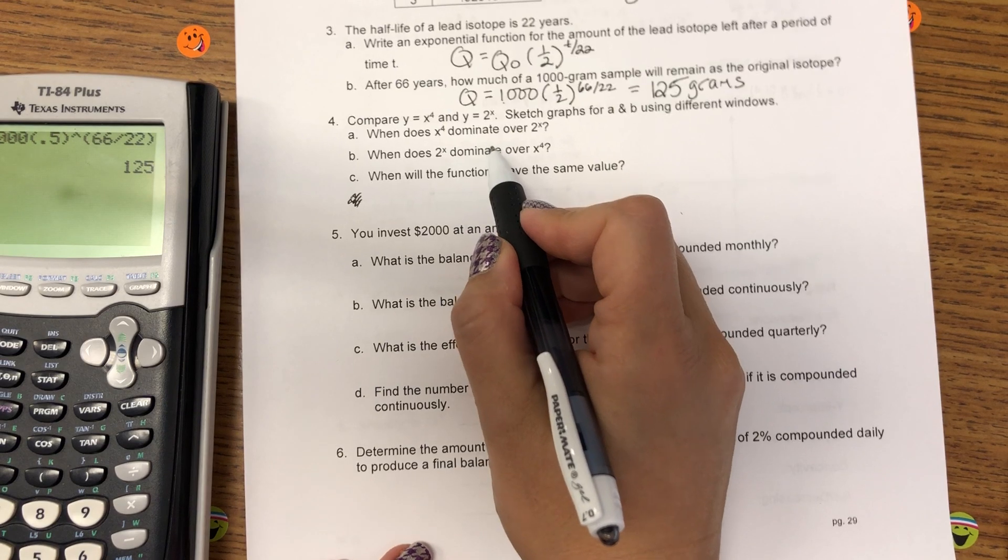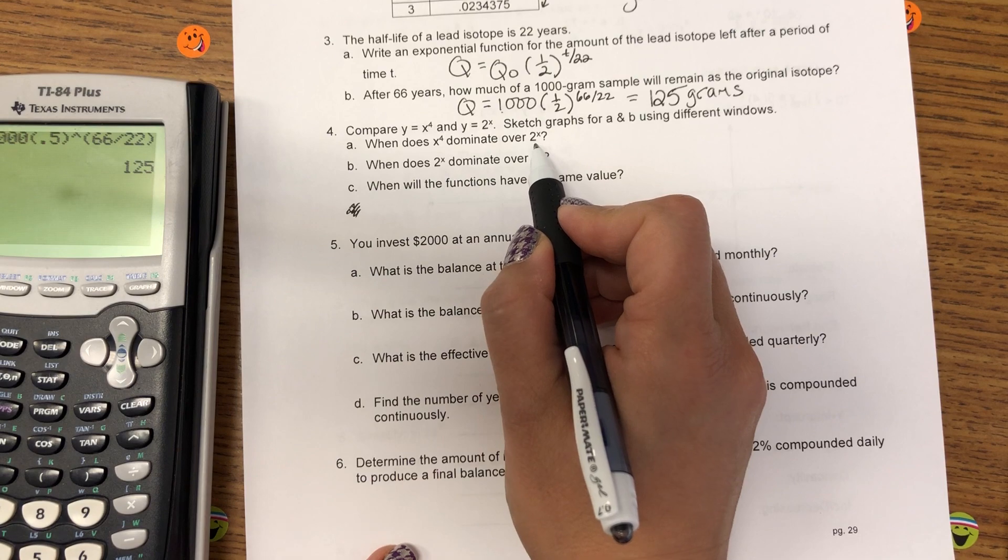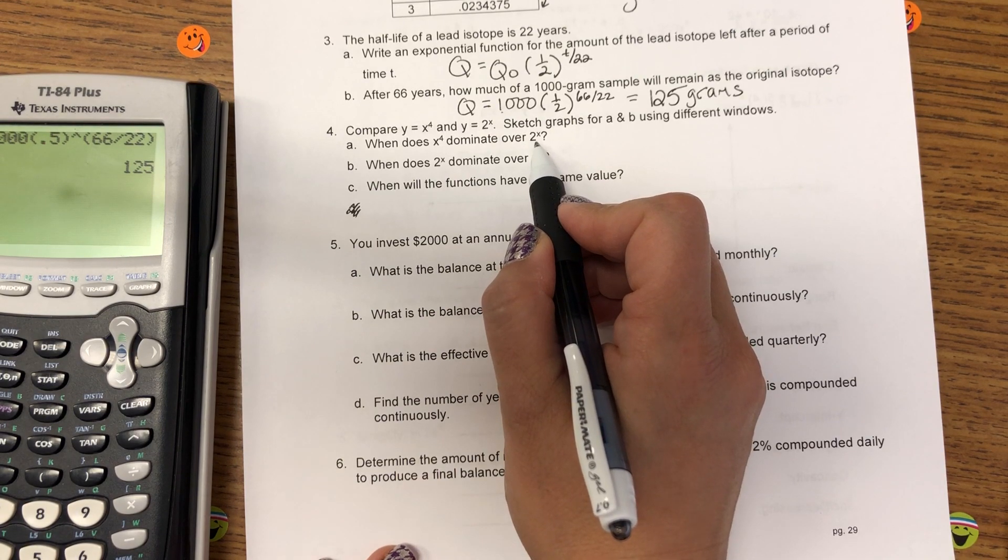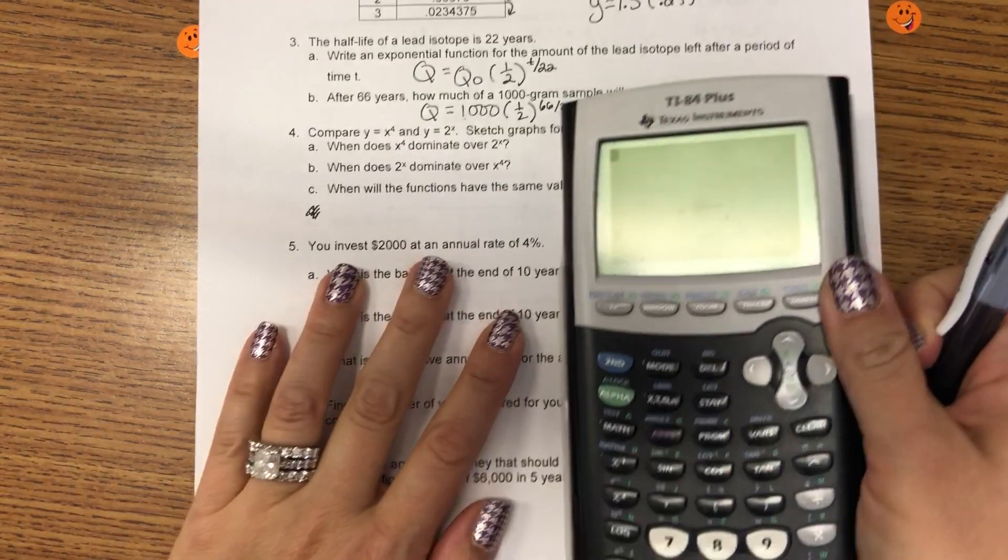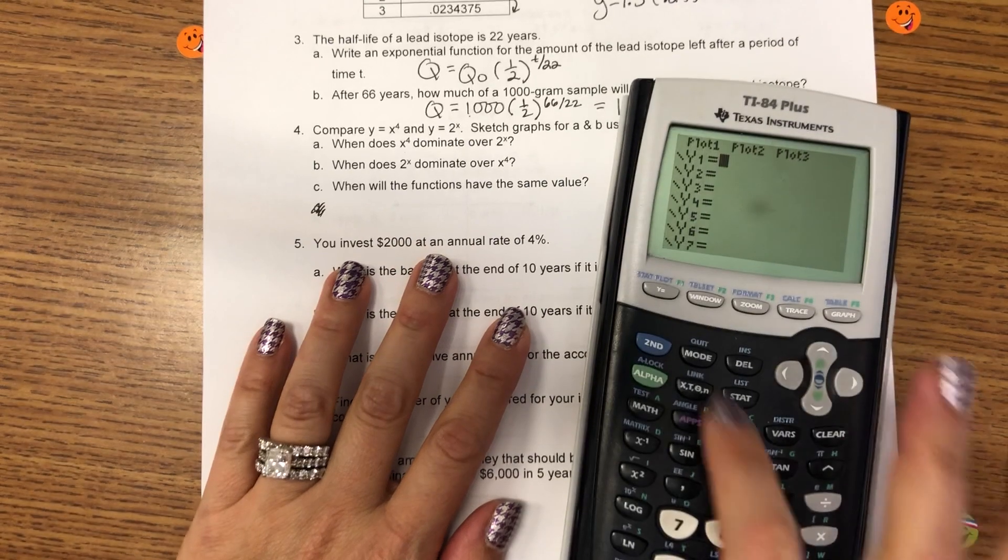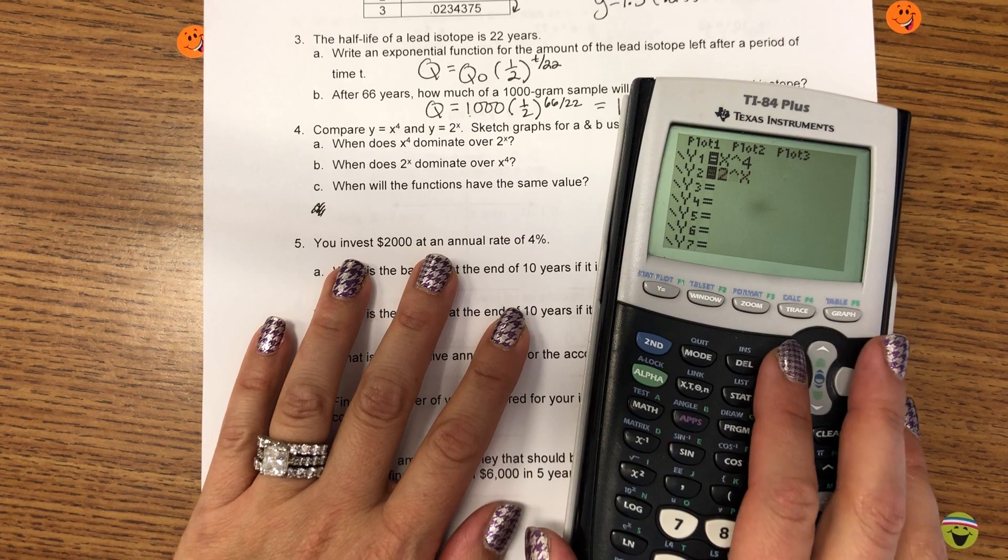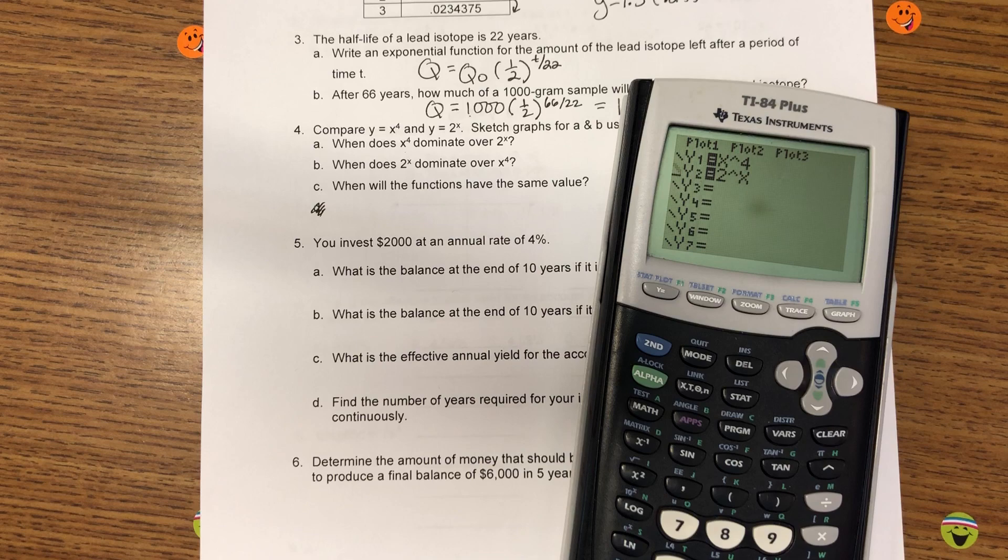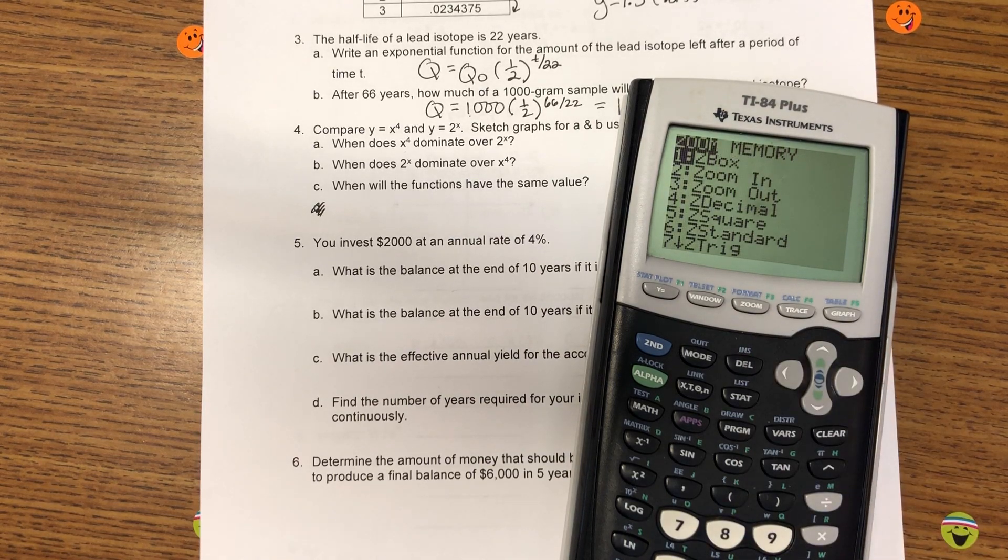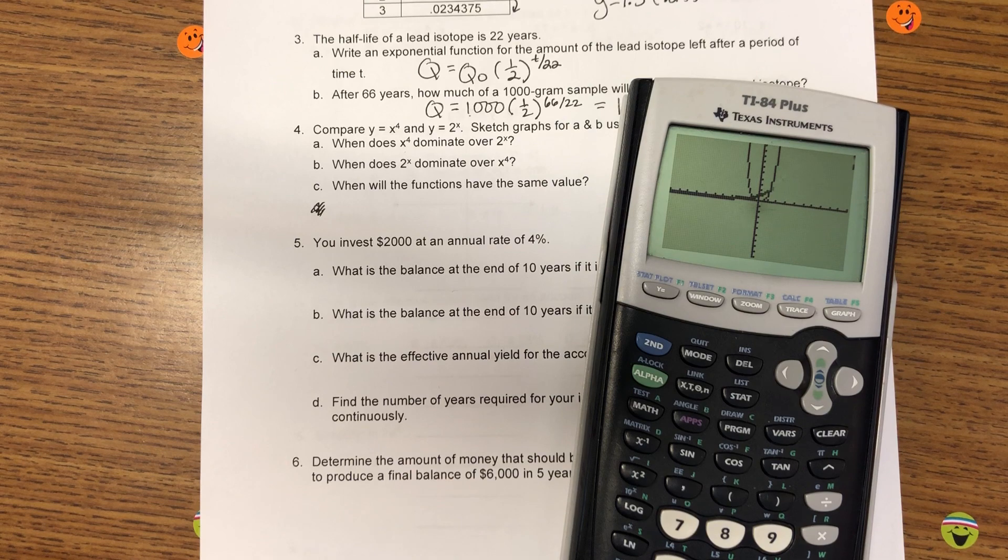Okay. So, first off, dominate means higher Y value. The exponential function will be bigger as X goes to infinity. So, I think X to the fourth will be bigger closer to zero. So, in my calculator, I've got X to the fourth and 2 to the X. And I have an older calculator, but if I arrow over to here and hit enter, it changes that function to a bold.